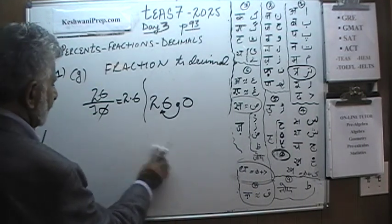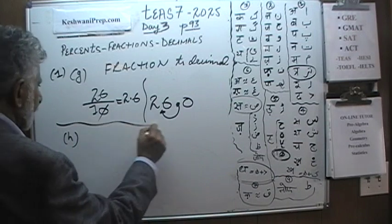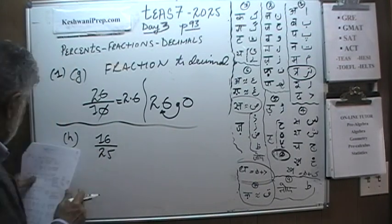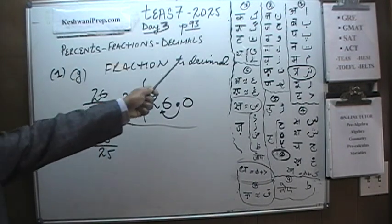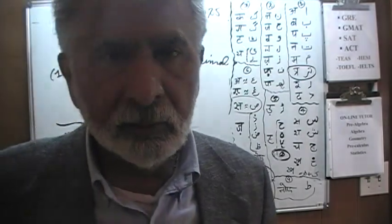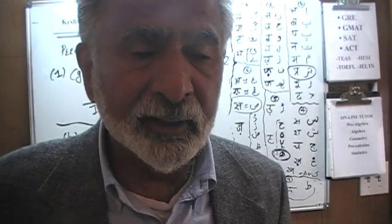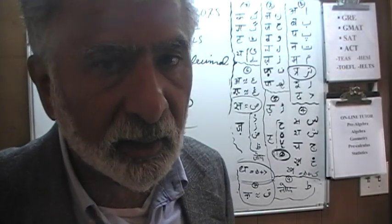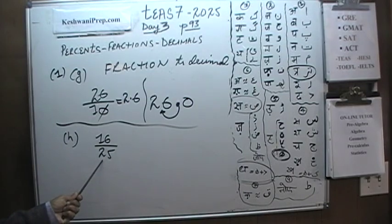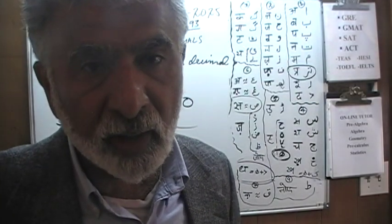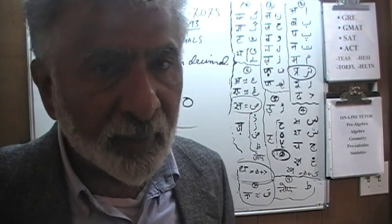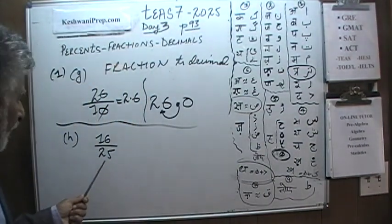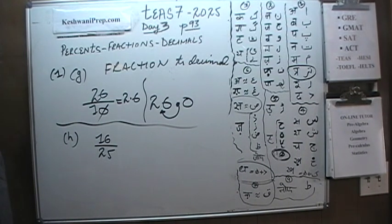Let's do the next one, part H. In part H we are given 16 over 25, and again we are being asked to convert this fraction into a decimal. Whenever you need to divide something by the number on the bottom, it always makes life easier if you can convert that bottom number into a multiple of 10 — a 10, 100, 1000, and so on. Is there any way we can convert this 25 into a multiple of 10? The answer is yes.